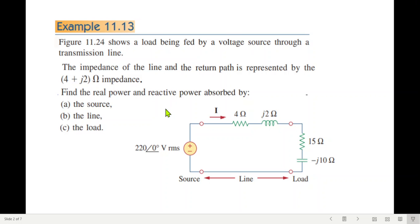For example 11.13, this figure shows a load being fed by a voltage source. This is the load supplied by a voltage source of 220 volt RMS. The impedance of the line and the return path is represented by this line impedance. Find the real power and reactive power absorbed by the source, the line, and the load.